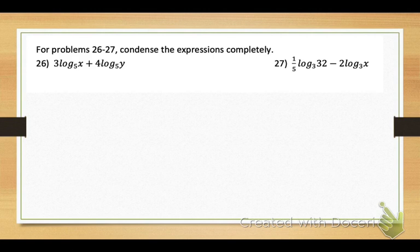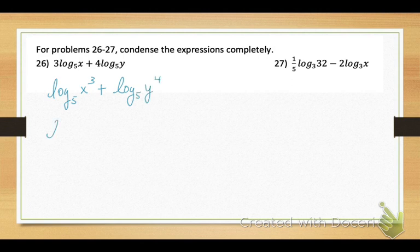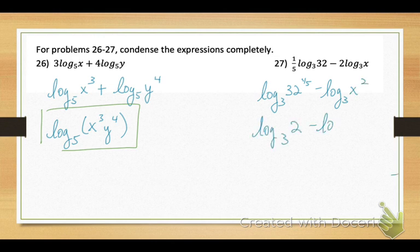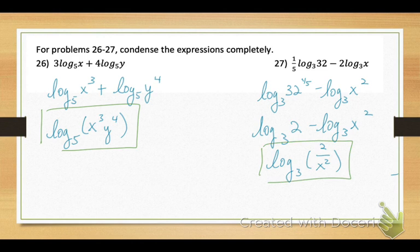Now condense — the opposite process, putting expressions into one logarithm. Number 26: rewrite multipliers as powers first: log base 5 of x cubed plus log base 5 of y to the fourth. Condense addition with multiplication: log base 5 of (x cubed times y to the fourth). Number 27: rewrite multipliers as powers — log base 3 of 32 to the 1/5 power minus log base 3 of x squared. Since 32 to the 1/5 equals 2, condense with division: log base 3 of (2 over x squared).